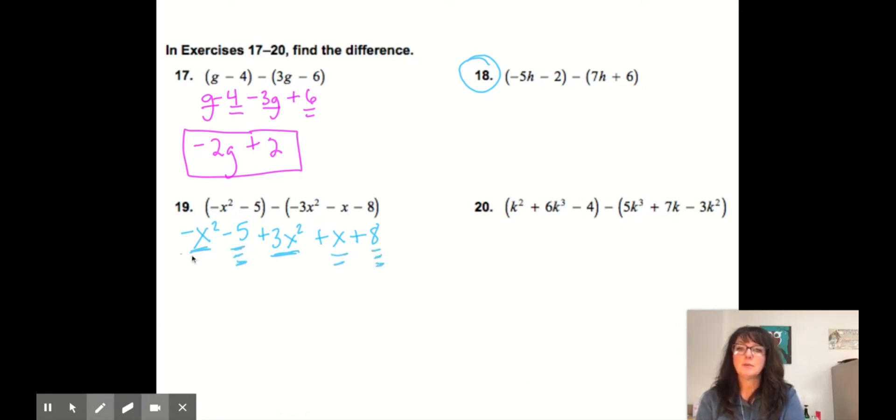The exponent of 1 is my second. And the constant is my third. So here, 3 minus 1 is 2x squared. Then I do my x, which has nothing to combine or add. And then the negative 5 and the positive 8 is a positive 3.